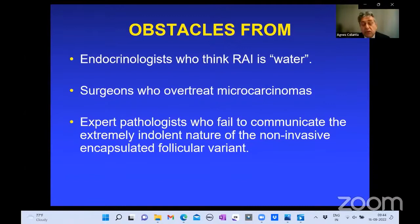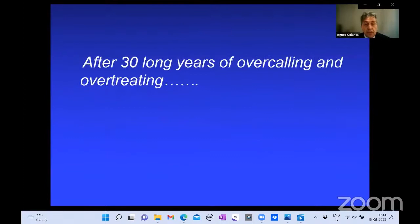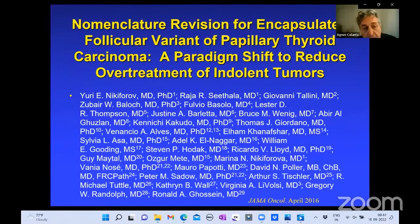We also had to battle surgeons who wanted to overtreat microcarcinomas. And finally, the people to blame are us — pathologists — who failed to communicate the extremely indolent nature of non-invasive encapsulated follicular variants. You'd send a case to one pathologist who calls it benign, another calls it malignant, and when they call it malignant they don't clarify this is a very good condition. After 30 years of over-coding and over-treating, things finally came to an end with a study published in JAMA Oncology in April 2016.